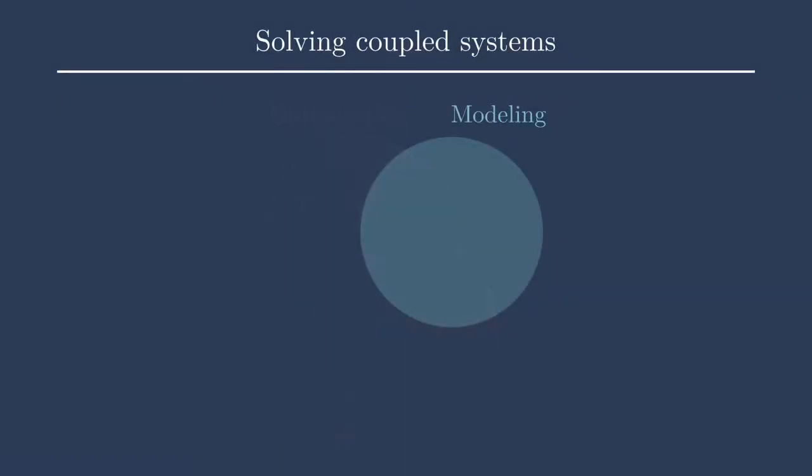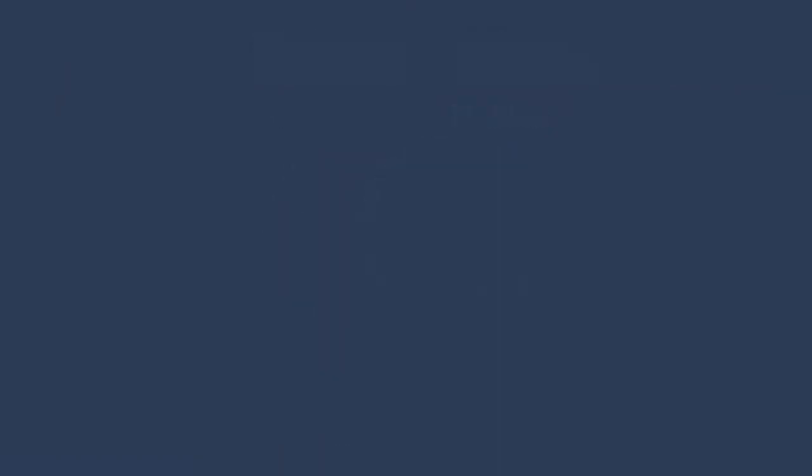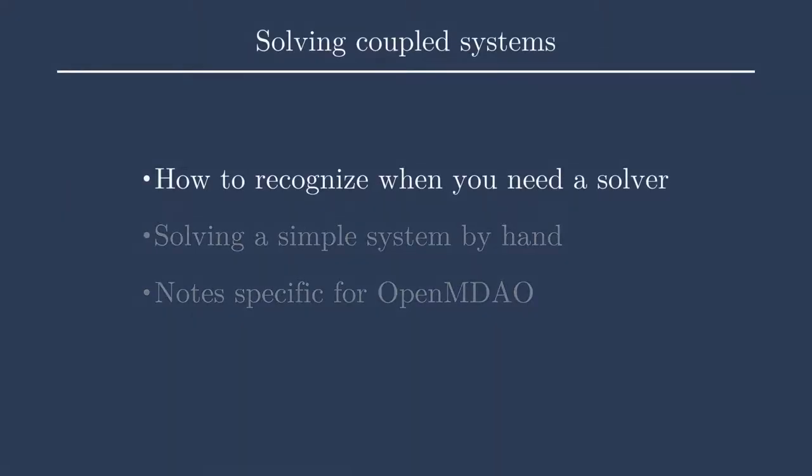This firmly has to do with the modeling portion of our practical MDO course. Let's first focus on how to recognize when you need a solver. What is a coupled or implicit system and what does this mean? I will share a few figures that come from Engineering Design Optimization by Martins and Ning, and I have a link in the description to a free PDF of the book with additional information.